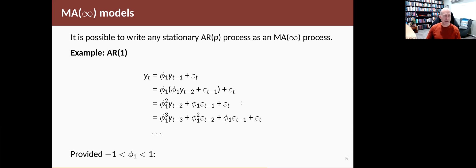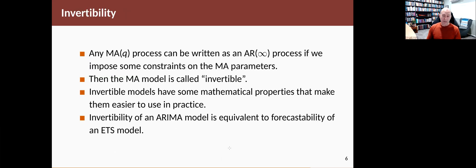So if you have a stationary AR(p) process, you can write it as an MA(infinity) process. And you can go the other way as well. You can take any MA(Q) process and write it as an AR(infinity) process, provided you impose some constraints on the MA parameters, a little bit like the stationarity constraints we impose on the AR parameters.